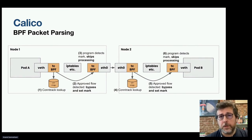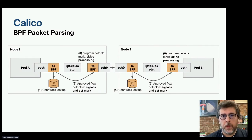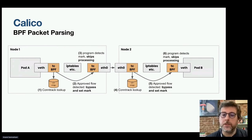The BPF data plane can scale to higher throughput and uses less CPU per gigabit than the standard IP tables data plane. At those TC hooks, we intercept the packets and do a lookup in what we call the CT map, which is equivalent to the conntrack table in the traditional IP tables data plane. If we've seen that flow before, we can bypass all of IP tables and send it directly to where it was supposed to go.